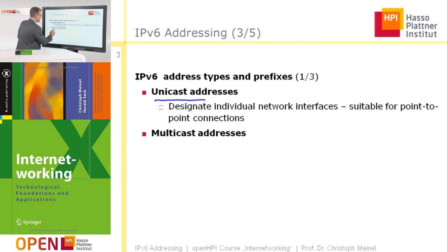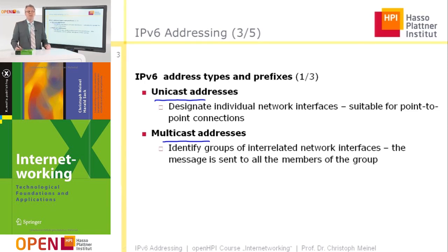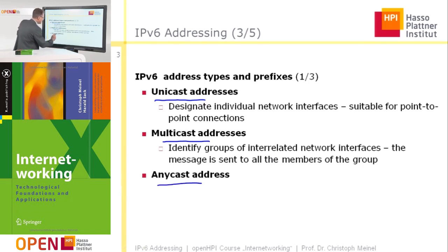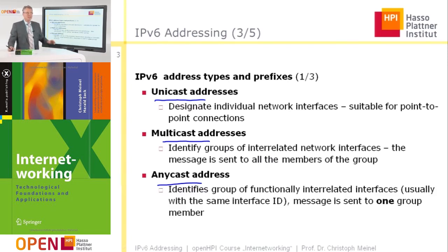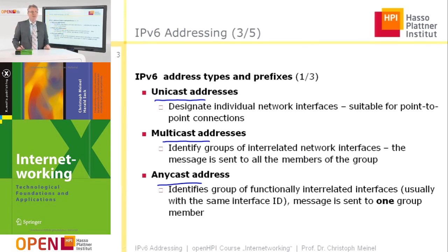Beside that, we have multicast addresses, which identify groups of interrelated network interfaces. A message sent to a multicast address is delivered to all members of the group, unlike a unicast address. The third type is anycast addresses, which identify groups of functionally interrelated interfaces that typically share the same interface ID, but the message is sent to only one group member rather than all.